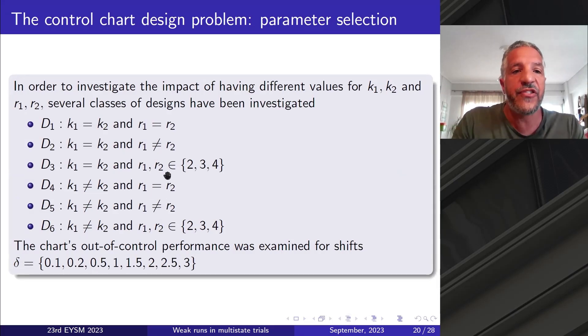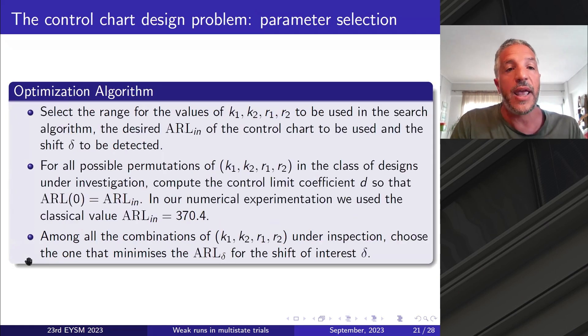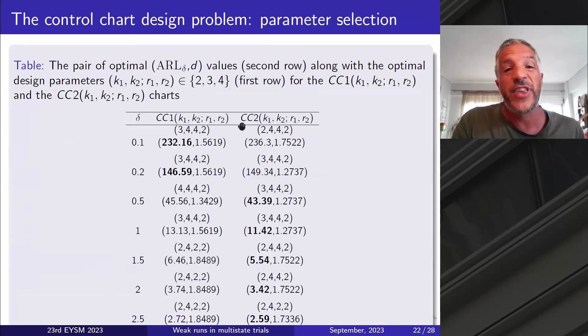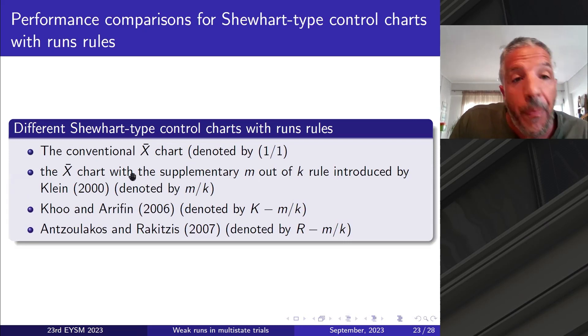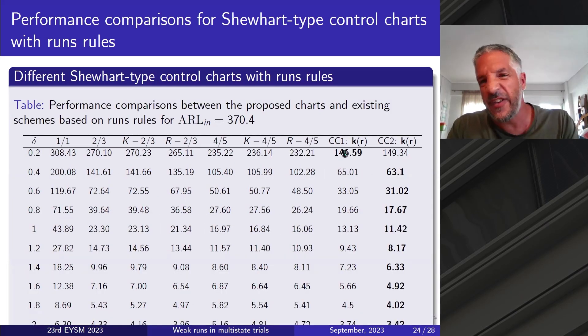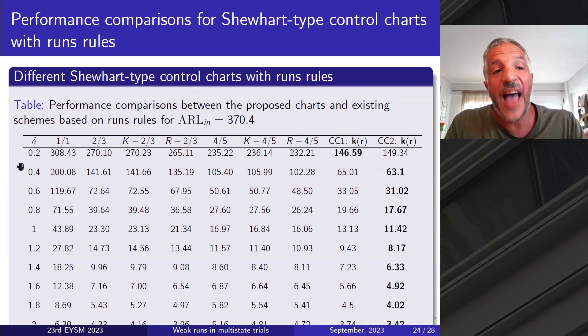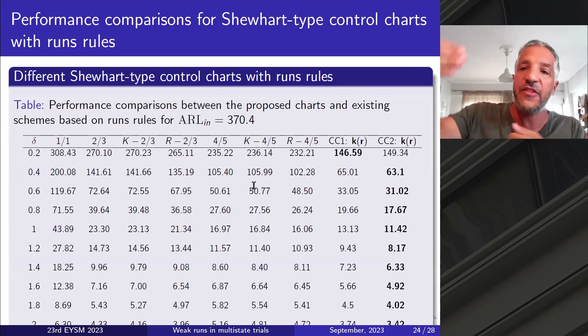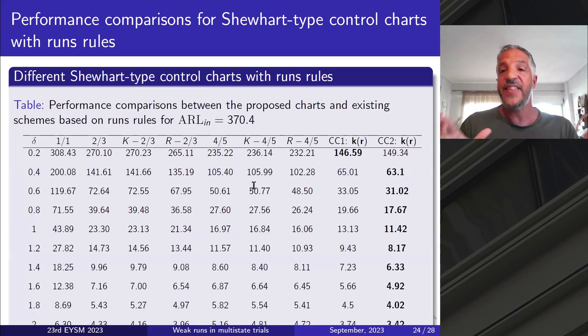What we did then is run numerically, and we tried to investigate the impact of having different values for k1, k2, r1, r2 for several classes of designs and for different shift magnitudes. With an optimization algorithm, we managed to get the optimal selections together with the ARL. And then we compare our new tools with the tools already existing in the literature. You can see from the board here that the ARL in our case for every shift magnitude is much better than the one of the charts that were proposed before.